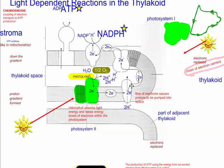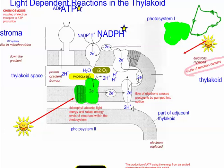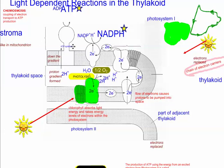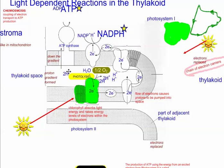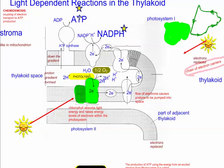This is called chemiosmosis, where the flow of electrons causes protons to be pumped into the space. After a buildup of protons, we get a proton gradient — many more protons inside compared to outside — and they're going to flow out by diffusion through a protein channel called ATP synthase. The flowing of protons out allows for the production of ATP, converting ADP plus phosphate to ATP.